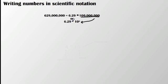Now, you might see it as 6.29 times 10 to the 8th with a dot, or you could also see it with a multiplication symbol, 6.29 times 10 to the 8th. For our purposes, we're going to be using the dot.